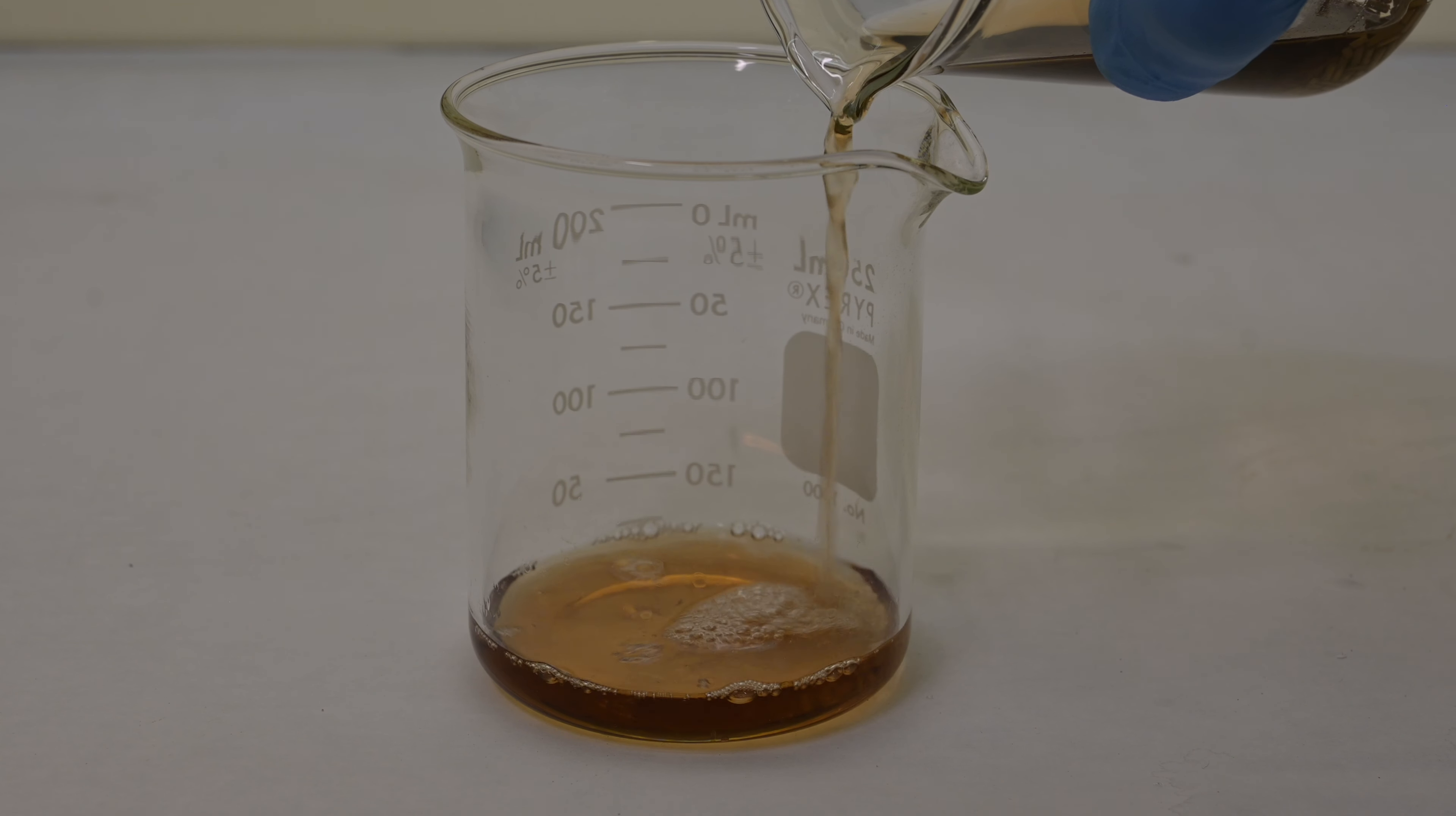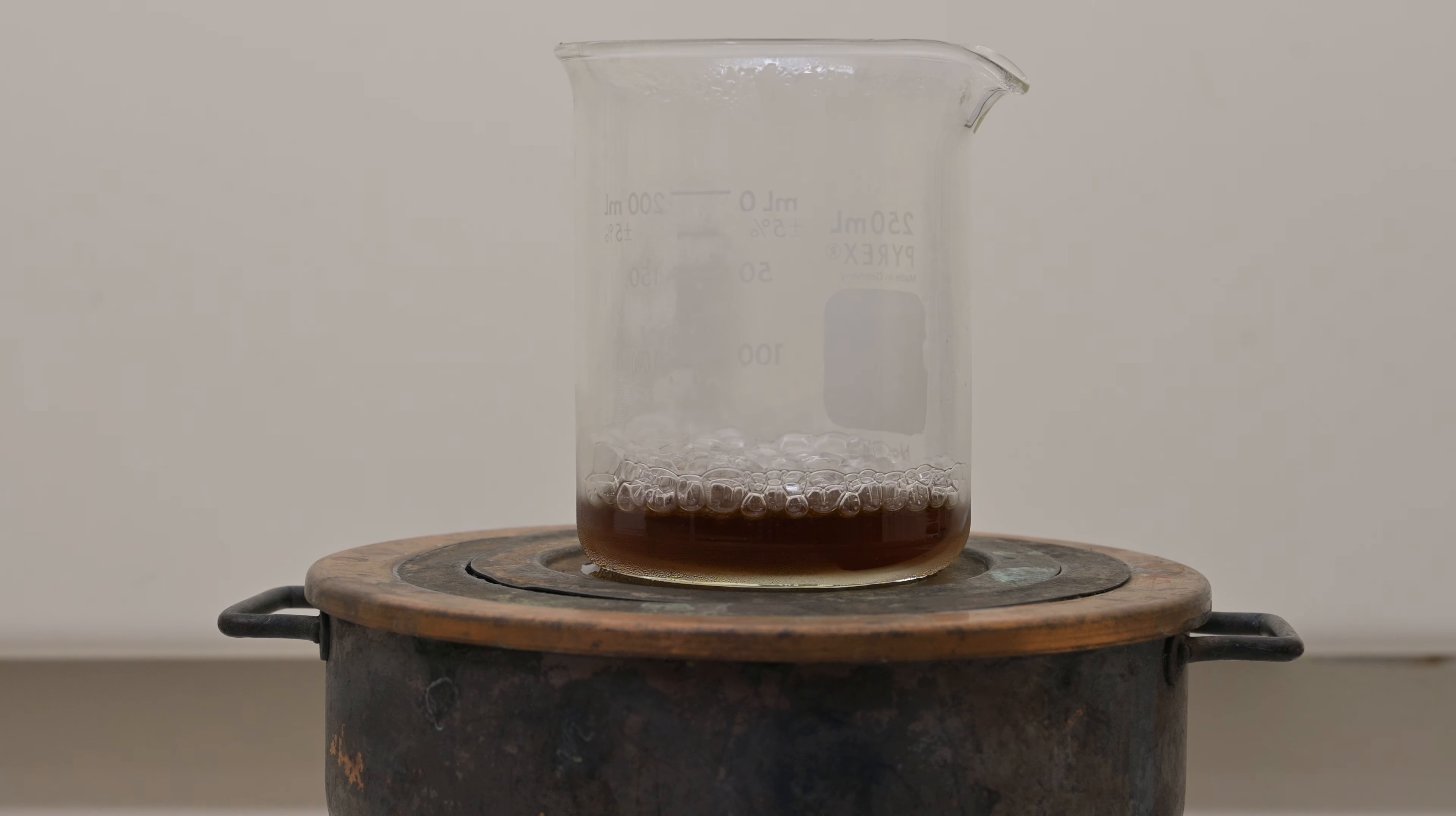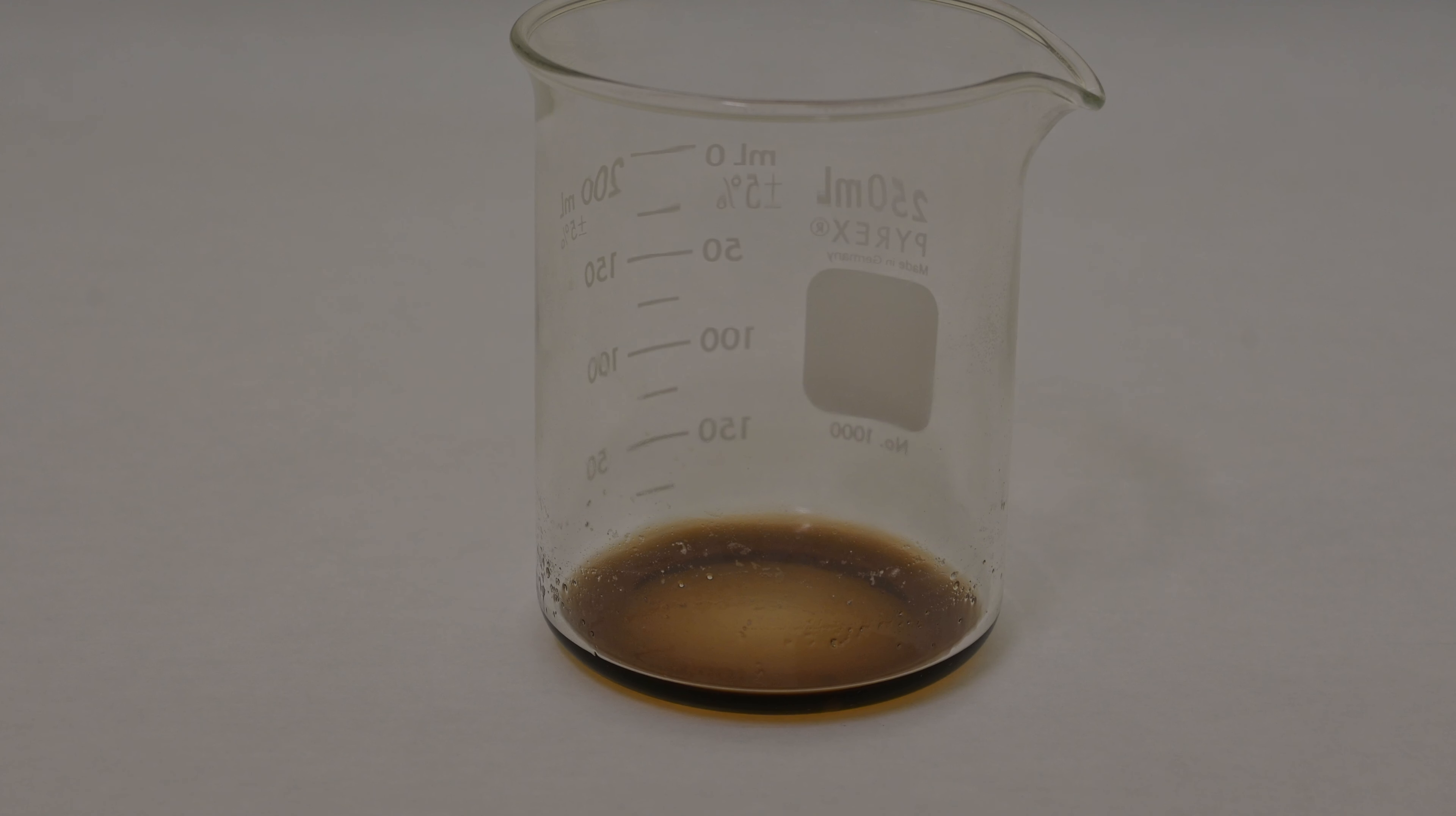After these washes, the dichloromethane solution is dried over a drying agent to remove any trace of water. Next, the dichloromethane is decanted into another beaker. Finally, the solvent is evaporated in a boiling water bath. This process removes the DCM solvent, leaving behind purified NN-diethyl-M-toluamide as a residue. These separation steps are essential to isolate the product in high purity, ready for further purification.